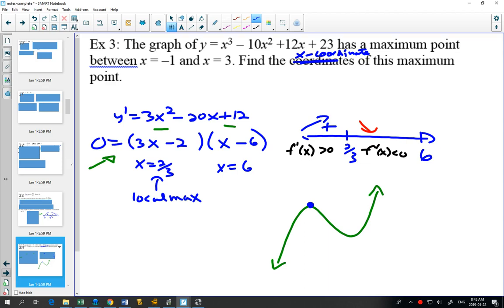And if I plugged in something between 2 thirds and 6, like 3, 9 minus 7, this one is going to be positive. 3 minus 6, that one stays negative. So this section is negative. And so we can find out where our function is increasing and decreasing, and we can say that at 2 thirds comma something, it's going to be a maximum. So if you wanted to find that y coordinate, you'd have to plug 2 thirds back into your original equation.